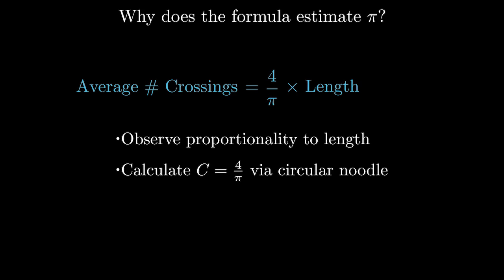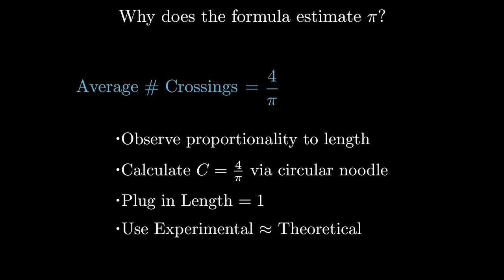Now, in our original experiment the spaghetti was 1 unit long, so we can plug in length equals 1 to see that the theoretical average number of crossings is 4 over pi. By the laws of probability, the experimental average is approximately equal to this too. This gives us a nice approximation we can work with.